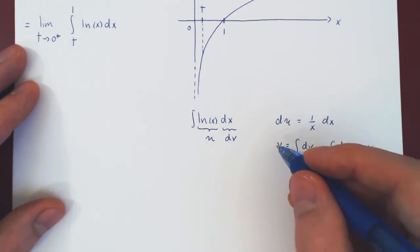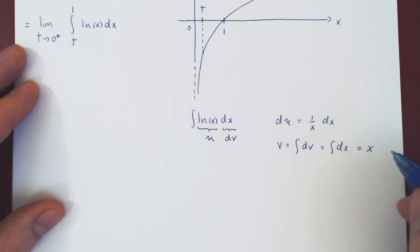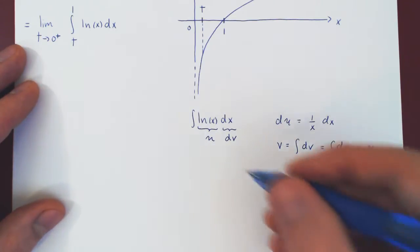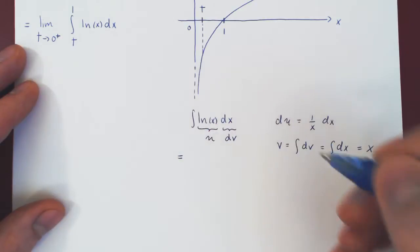And as always, when we find the v in integration by parts, we do not need to add plus c. So, what do we have now?